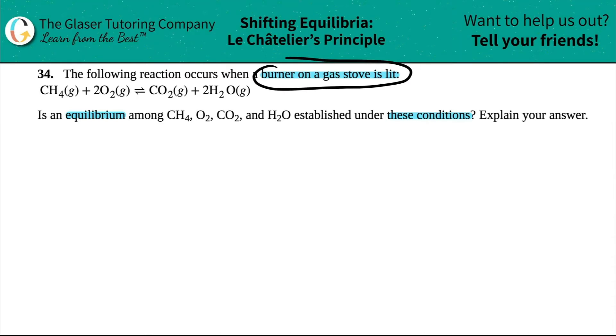We're lighting the burner. Is there going to be equilibrium, meaning can I use these double arrows, or is it just a single arrow? Remember, only when you have double arrows is there an equilibrium.